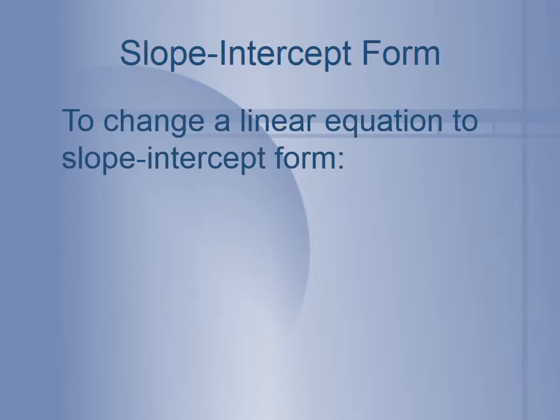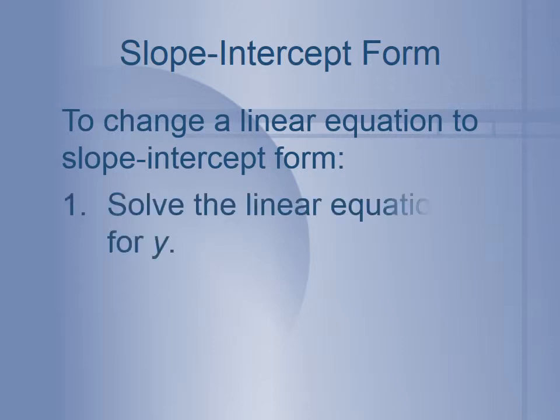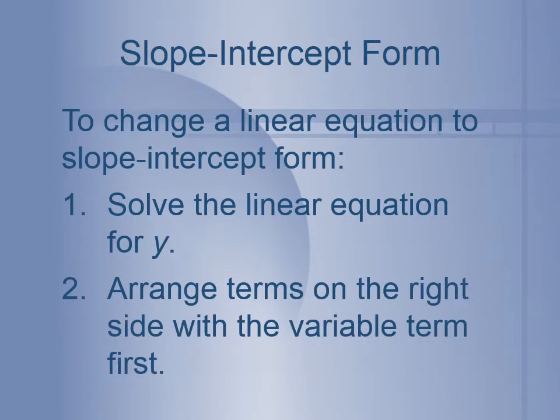Let's write down the steps on how to change a linear equation to slope-intercept form. Step 1: solve the linear equation for y. Step 2: arrange the terms on the right-hand side so that the variable term — the term that has the x in it — appears first.